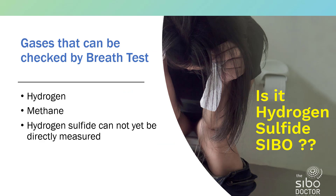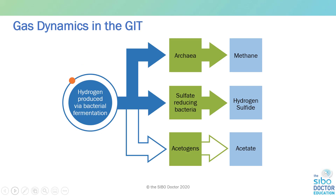Let's begin by looking at the gases that can be produced by organisms in the digestive tract and that can be directly measured on a breath test. We have hydrogen gas, typically produced by proteobacteria in the small intestine but can be produced anywhere in the digestive tract. We also have methane, produced by Methanobrevibacter smithii, a type of archaea, and hydrogen sulfide. However, hydrogen sulfide cannot yet be measured on a breath test. On this graph we see that hydrogen produced by bacterial fermentation can be used to produce other gases — namely methane, hydrogen sulfide, and acetate — but we cannot measure hydrogen sulfide or acetate on a breath test. We're really just looking for hydrogen and methane, but this graph helps visualize the gas dynamics in the small and large intestine.